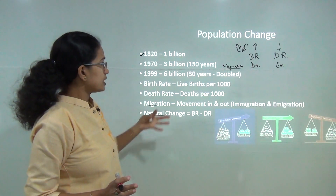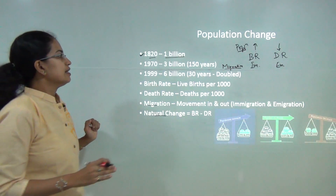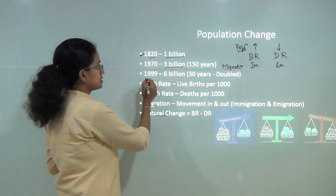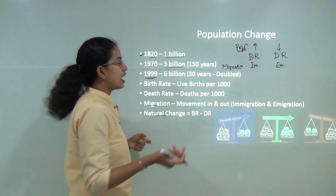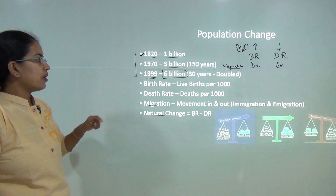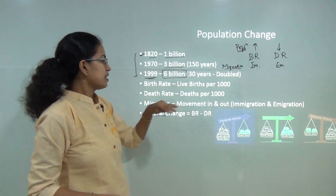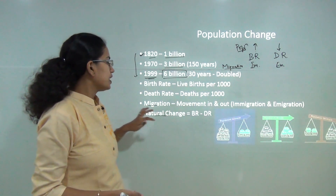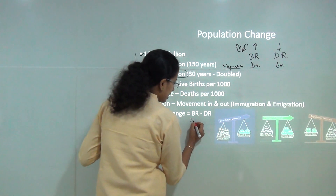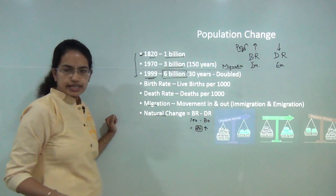In 1820, there was only 1 billion population worldwide. In 150 years it became 3 billion in 1970, and in only 30 more years — by 1999 — the population doubled to 6 billion. That's the pace at which the population is growing worldwide. Birth rate is live births per thousand, and death rate is deaths per thousand. The natural change is the difference between birth rate and death rate. So if birth rate is 100 and death rate is 80, there is a natural increase of 20.